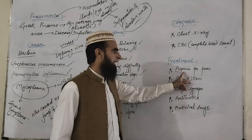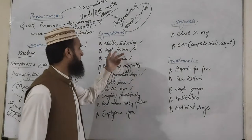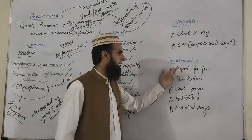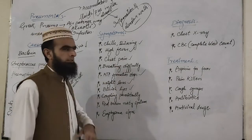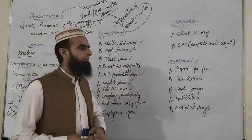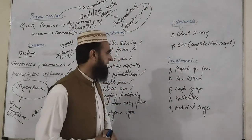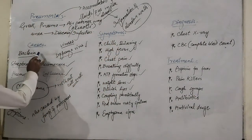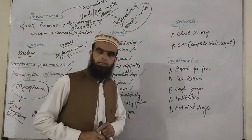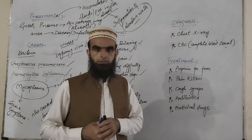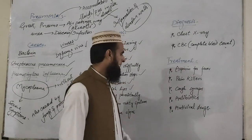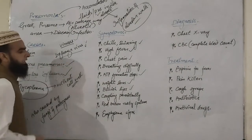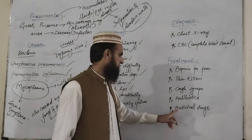In terms of treatment: we must take aspirin for fever to reduce and control the high temperature. Similarly, since chest pain is a symptom, we have to use painkillers. For persistent coughing, cough syrup may also be taken. Since pneumonia can be caused by bacteria, we have to use antibacterial drugs — antibiotics. And since it may also be caused by viruses, once there is a viral attack, we can use anti-viral drugs. These are the different kinds of treatments available for pneumonia.